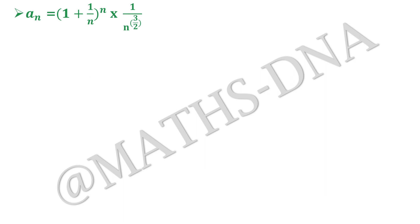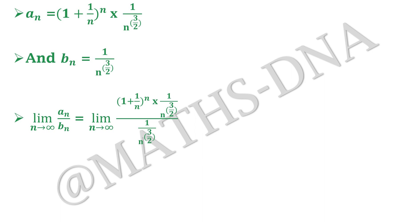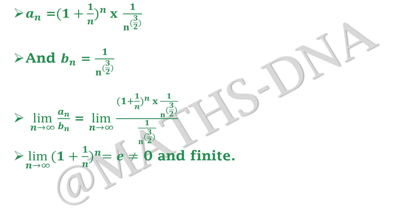So aₙ = (1+1/n)^n · (1/n^(3/2)). If we assume bₙ = 1/n^(3/2), it cancels in the limit, and we are left with limit n→∞ of (1+1/n)^n, which we know equals e — which is finite and nonzero.